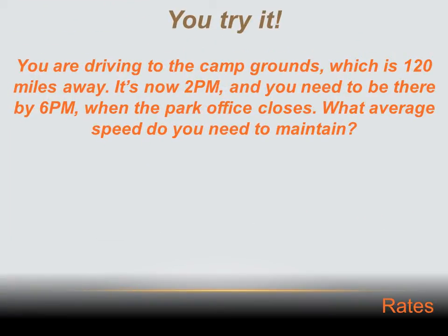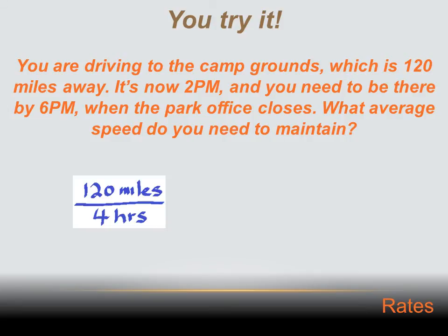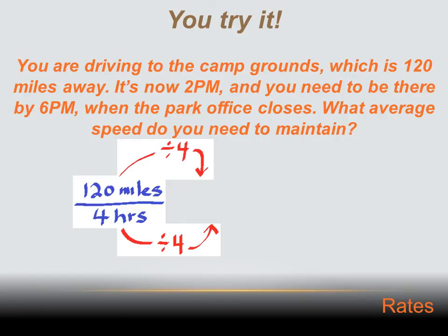You're driving to a campground 120 miles away. It's 2 p.m. and you need to be there by 6 p.m. when the park office closes. What average speed do you need to maintain? Create a rate: 120 miles in 4 hours. To convert to a unit rate, divide both by 4. 120 miles divided by 4 gives 30 miles per one hour — you need to maintain 30 miles per hour.